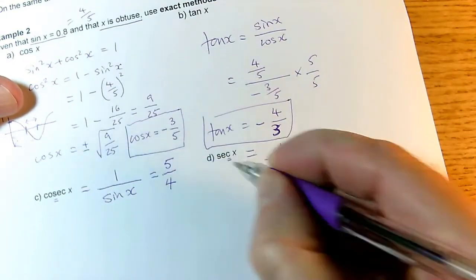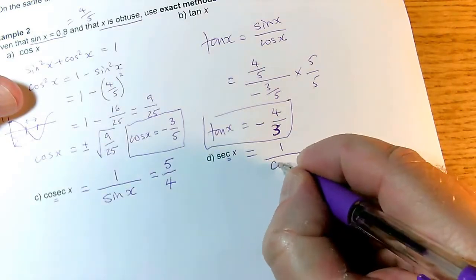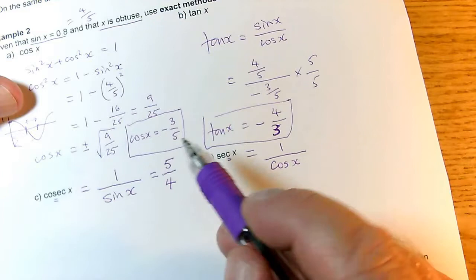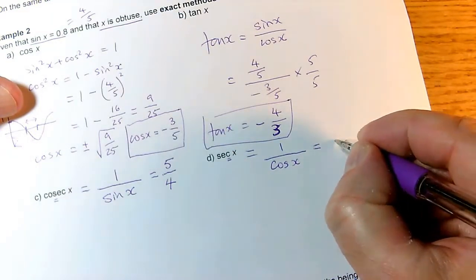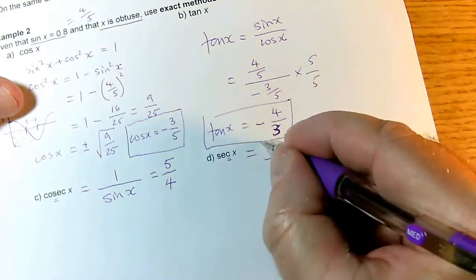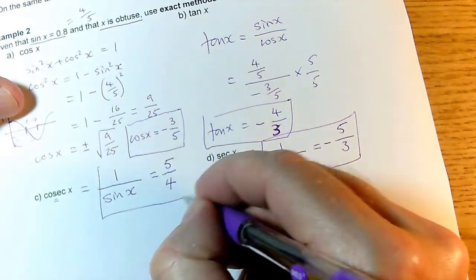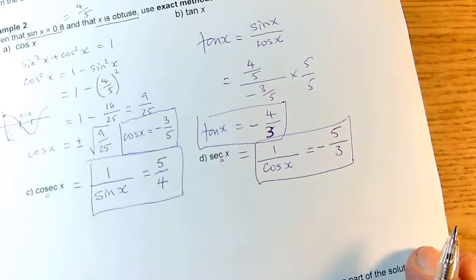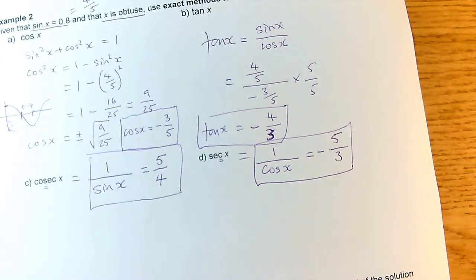And sec x - the third letter is c, so that means it's the reciprocal of cos x. Cos x was -3/5, so I need the reciprocal of that. The 5 goes on top, the 3 goes on the bottom, but it's still negative, giving -5/3. So I've got my cosec x and sec x, and I'm done.